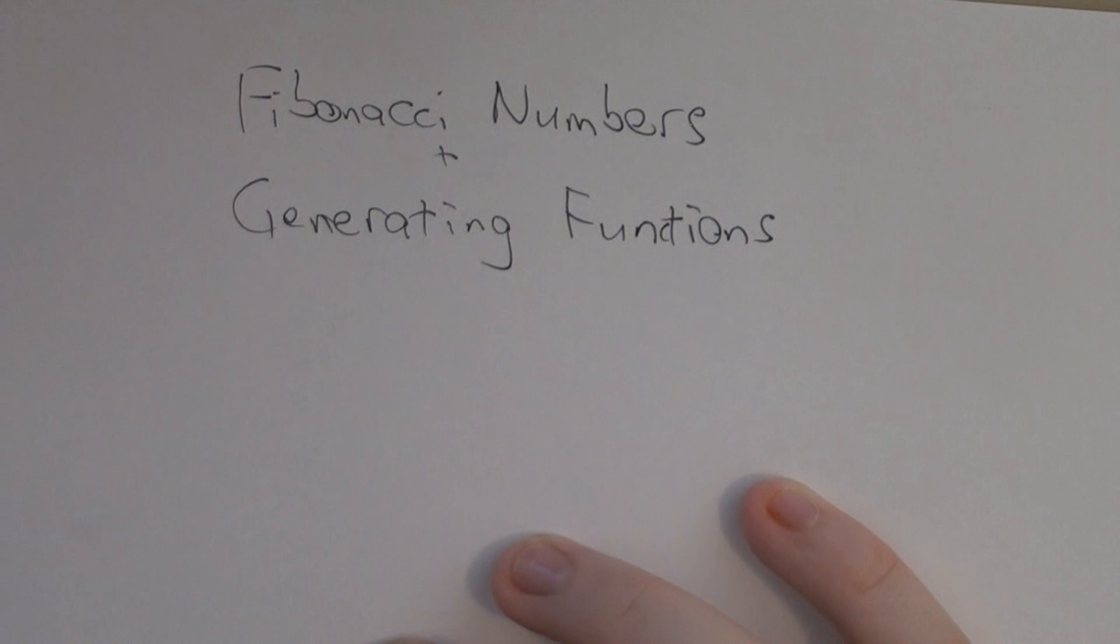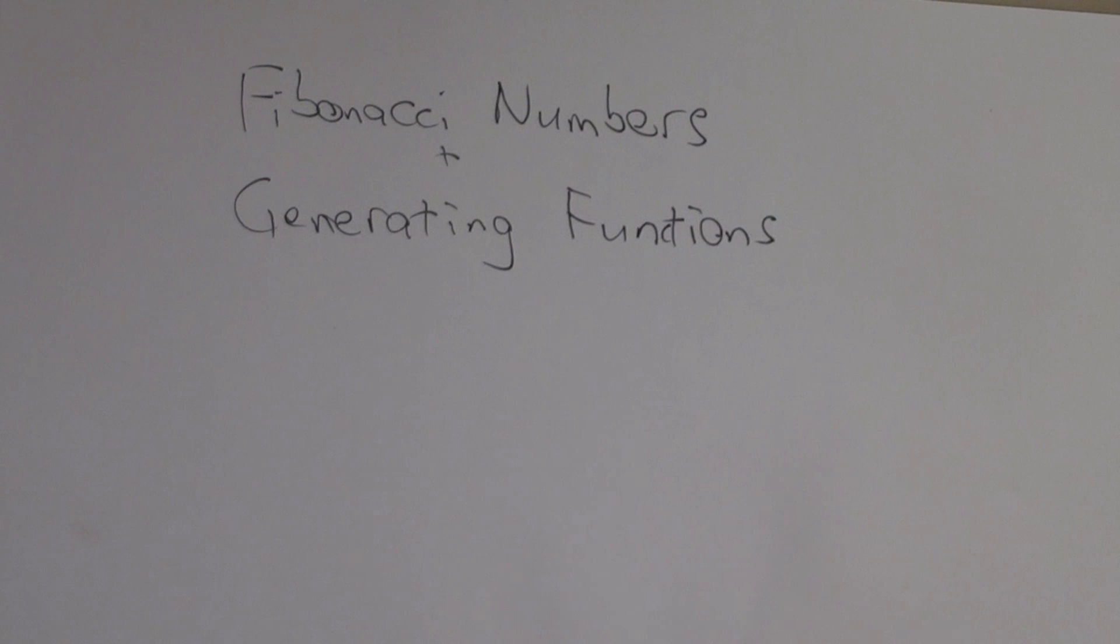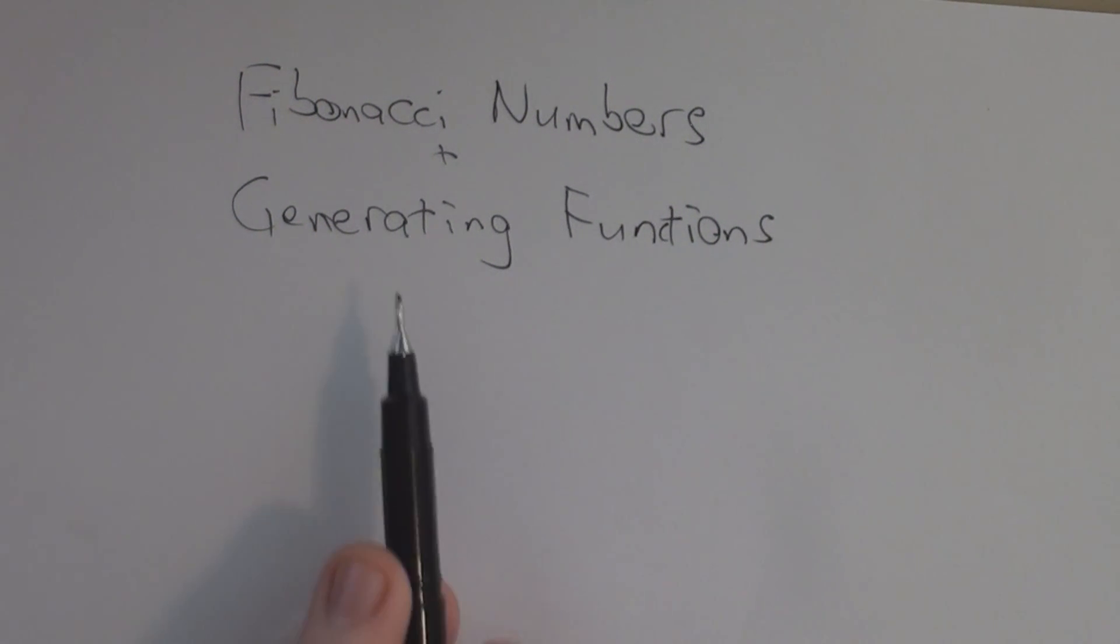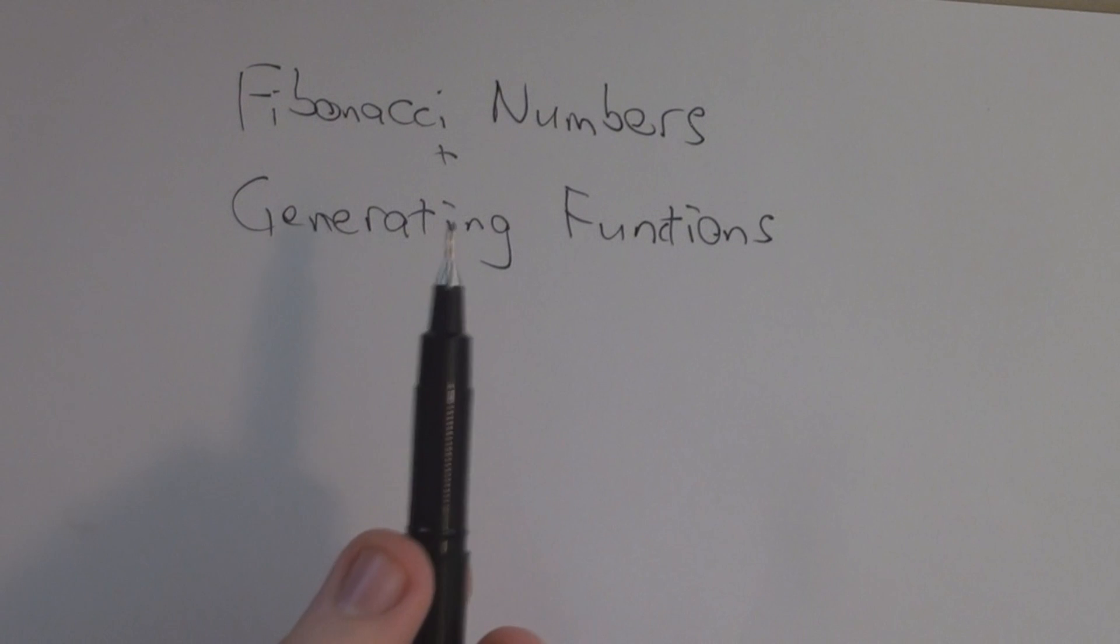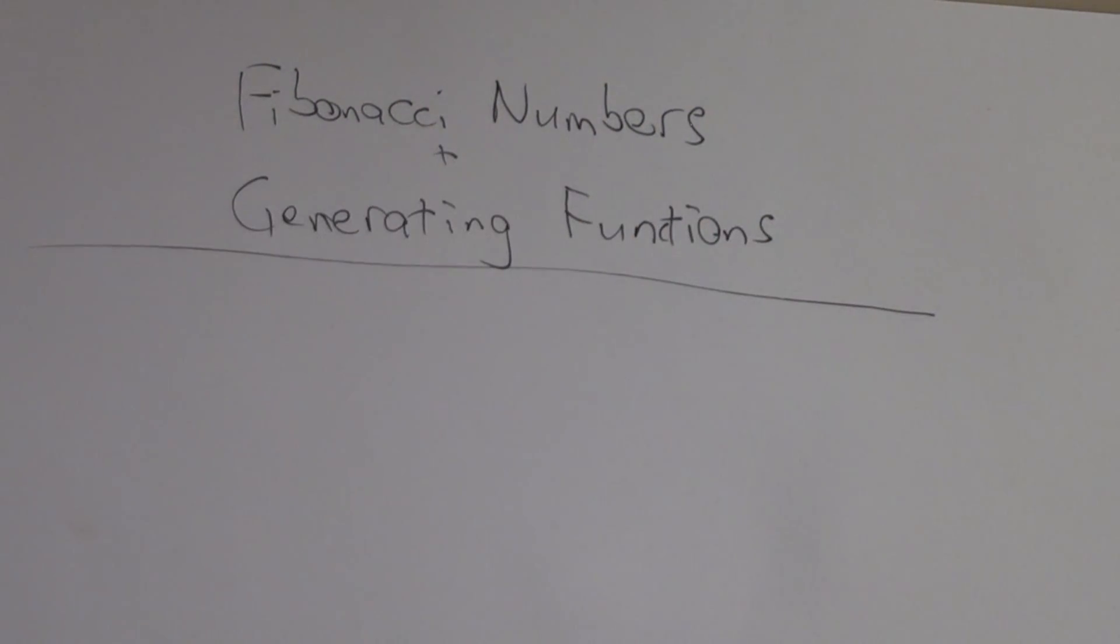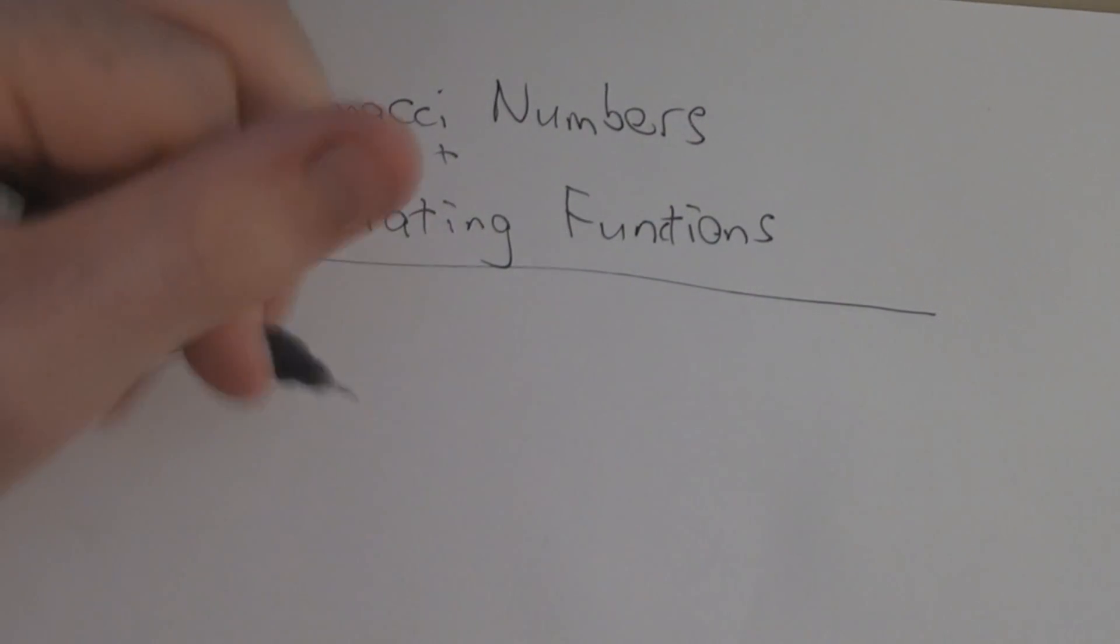So I'll very quickly run through what a Fibonacci number is. It's a sequence of numbers, and it's actually a family of sequences, but we're going to talk about the main ones. And then we'll talk about how we use generating functions to find out some stuff about Fibonacci numbers. So Fibonacci numbers, you start with zero, and then you go one, and then you make every next number is the sum of the two previous numbers.